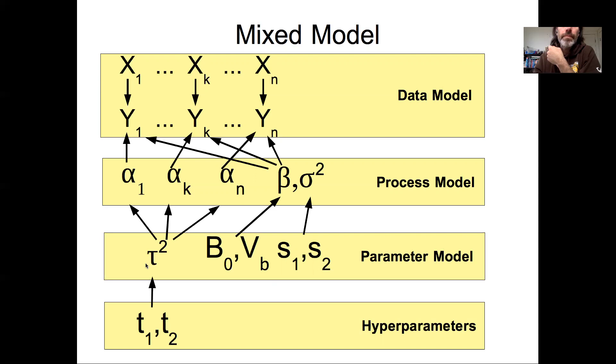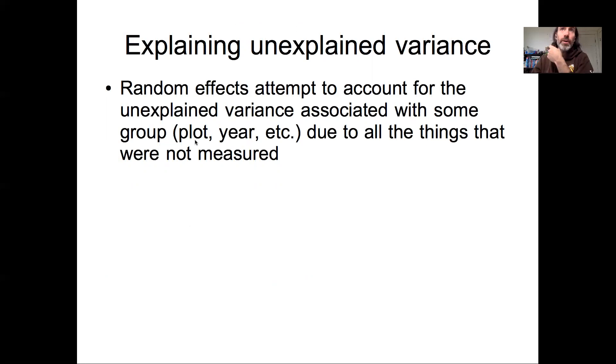So the idea within this kind of mixed effects framework, similar to what I was talking about at the end of the last lecture on JAGS code for random effects model, is that we use the random effects model to account for the unexplained variance associated with some measurement unit, group, plot, year, etc.